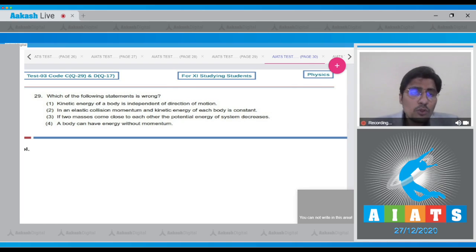Third option says, if two masses come close to each other, the potential energy of the system decreases. This is correct. And the fourth option says, the body can have energy without momentum. One of the examples is the gravitational potential energy which is due to the position of the particle and it is not dependent whether the particle is moving or stationary.